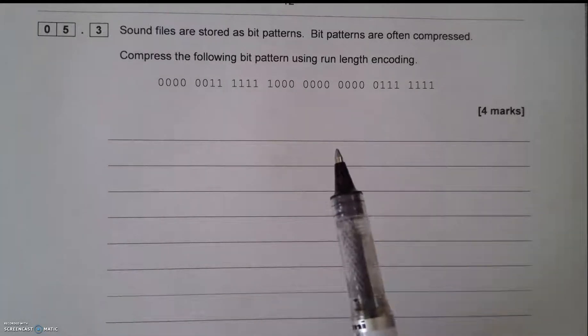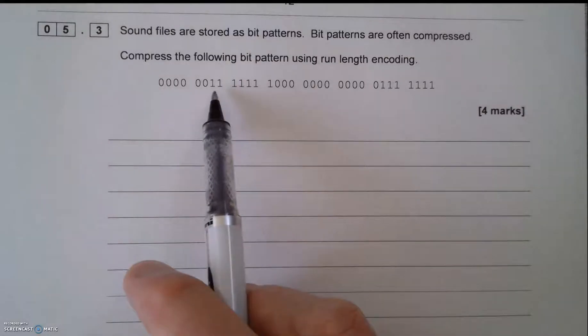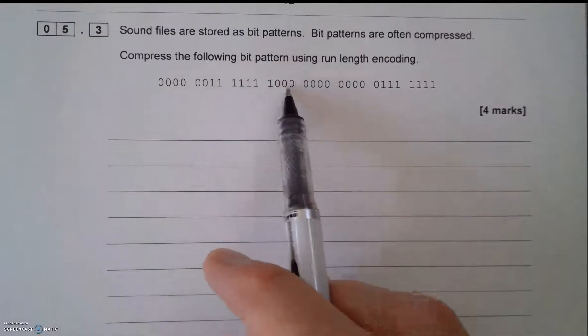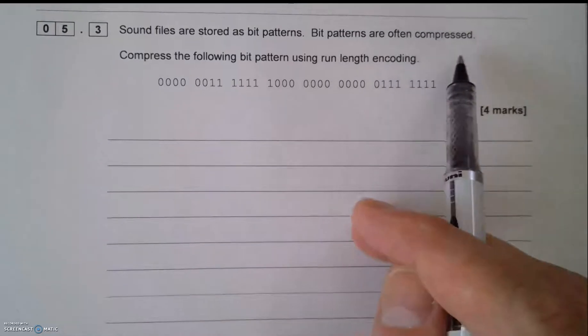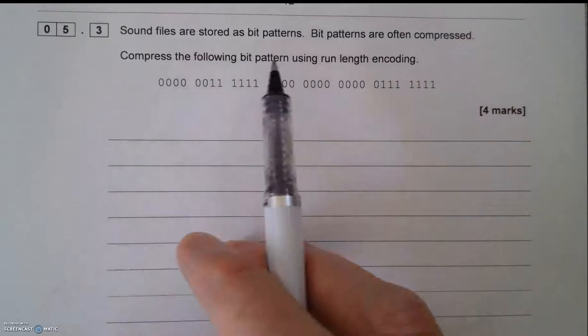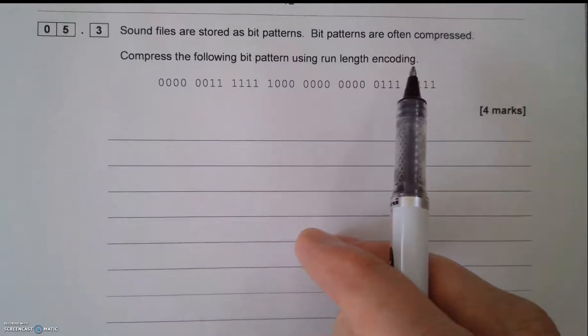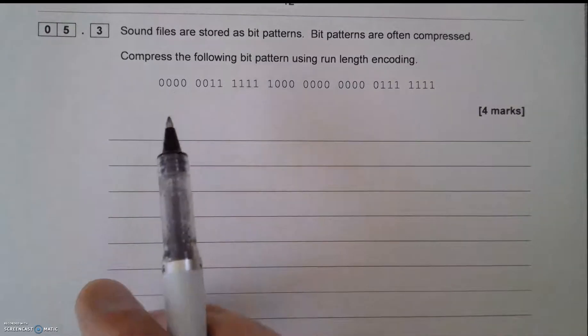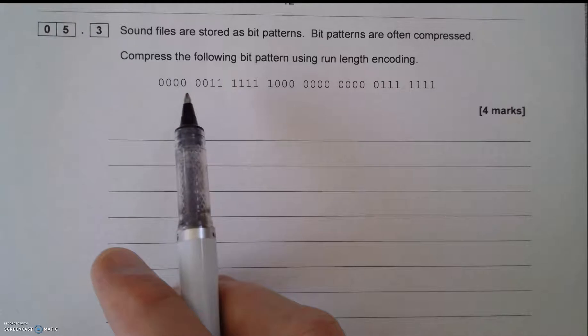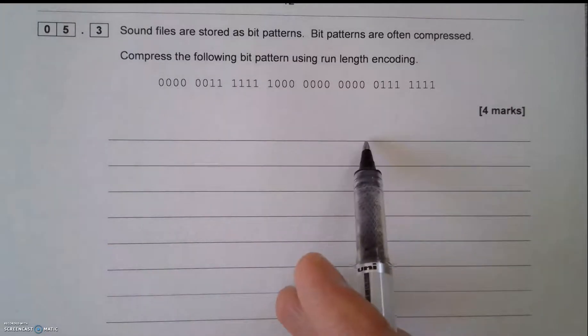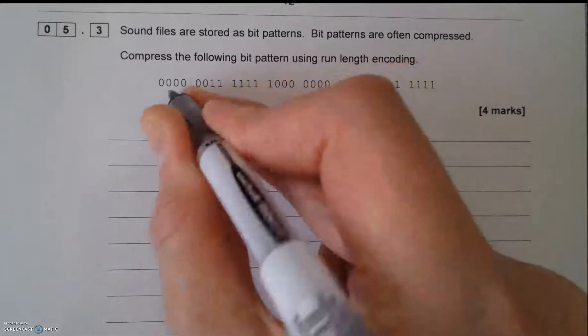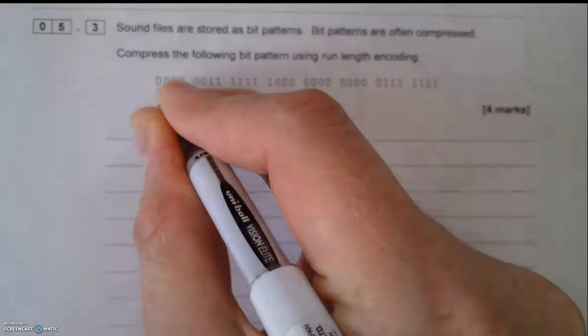What we've got here is a sound file which is stored as a bit pattern. These are all the bit patterns there that store the sound file. Bit patterns are often compressed. Compress the following bit pattern using run-length encoding. With run-length encoding, you're counting the frequency of the ones and zeros and simply recording it. I start on the left-hand side and count towards the right.